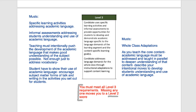Let's read the text and then look at the musts. There are two blocks here. The first block: the candidate uses specific learning activities and informal assessments to provide opportunities for students to develop and demonstrate academic language specific to the language demands of the learning segment and the content-specific learning goals. So there are two things: your learning activities must address academic language, and your informal assessments have to address academic language as well. You're looking to see how students are using the academic language and characterizing it through some kind of informal assessment. Both what they're doing and how you're measuring has to happen.